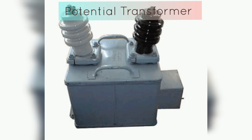A potential transformer (PT) is a type of instrument transformer used to measure high voltage levels in power systems. PTs work on the same principle as current transformers, using electromagnetic induction to provide a reduced voltage output proportional to the original voltage. The primary winding of a PT is connected in parallel with the conductor carrying the high voltage to be measured. The secondary winding is connected to a measuring instrument such as a voltmeter or relay, and provides a reduced voltage output proportional to the original voltage. The ratio of primary to secondary windings determines the amount of voltage reduction.